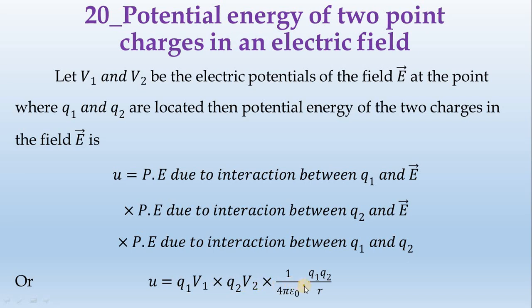Then the interaction between Q1 and Q2, that is how we represent 1 divided by 4 pi epsilon. Potential is equal to 1 divided by 4 pi epsilon naught into charge divided by distance. Here is the two charge Q1 and Q2 divided by R.